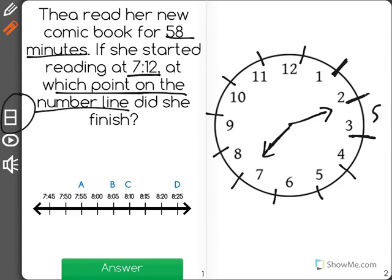Now, we're at 55 minutes here, but she read for 58 minutes. So there's 5 minutes between dashes. I need to count 3 more, 56, 57, 58.